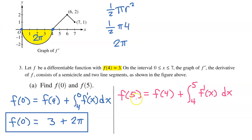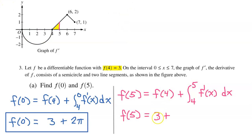We can find the value of f at 5 again using the first fundamental theorem of calculus. So f at 5 will equal the initial value f at 4, plus the integral of f prime from 4 to 5. We are given that f at 4 is 3, and the integral of f prime from 4 to 5 is the area between the curve and the x-axis between 4 and 5 — this tiny yellow triangle, which has area of one half of a square. So f at 5 will be 3 plus one half, or 3.5.